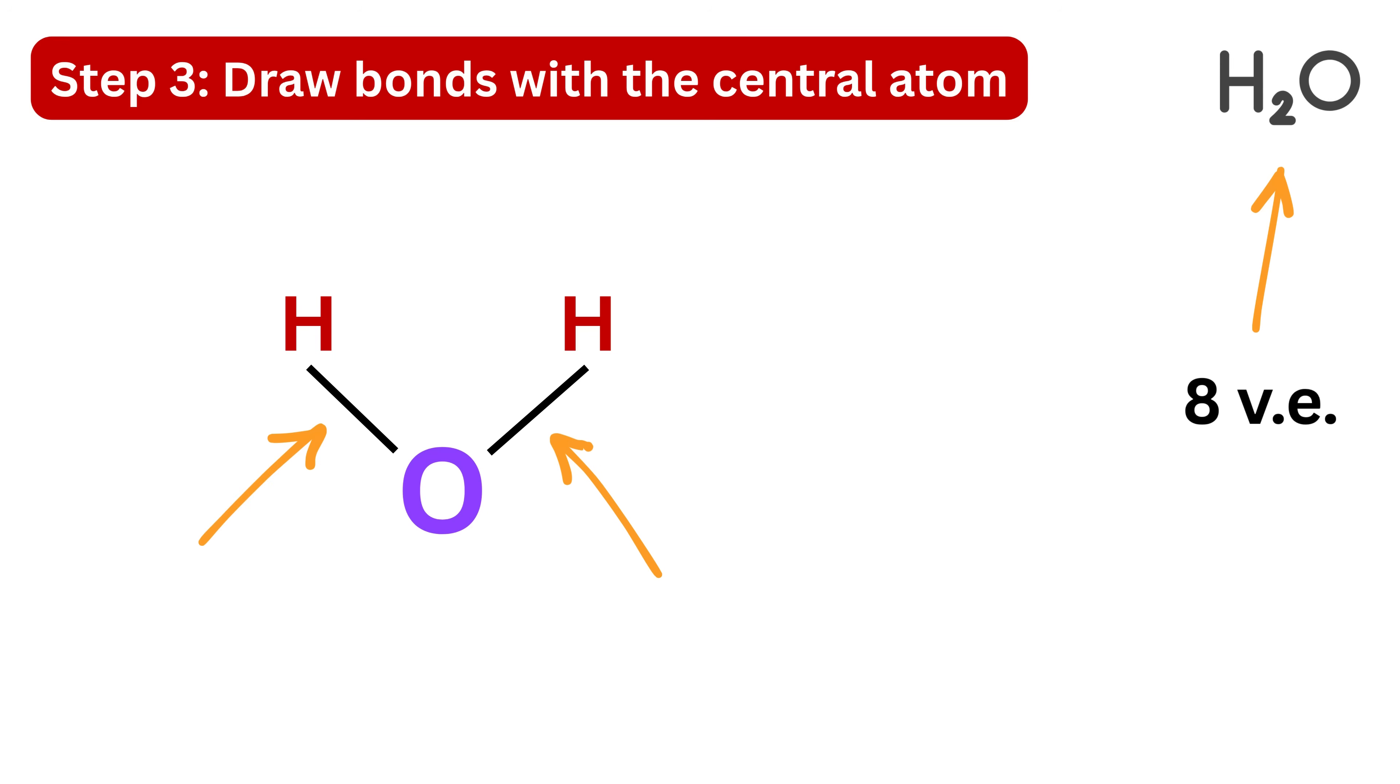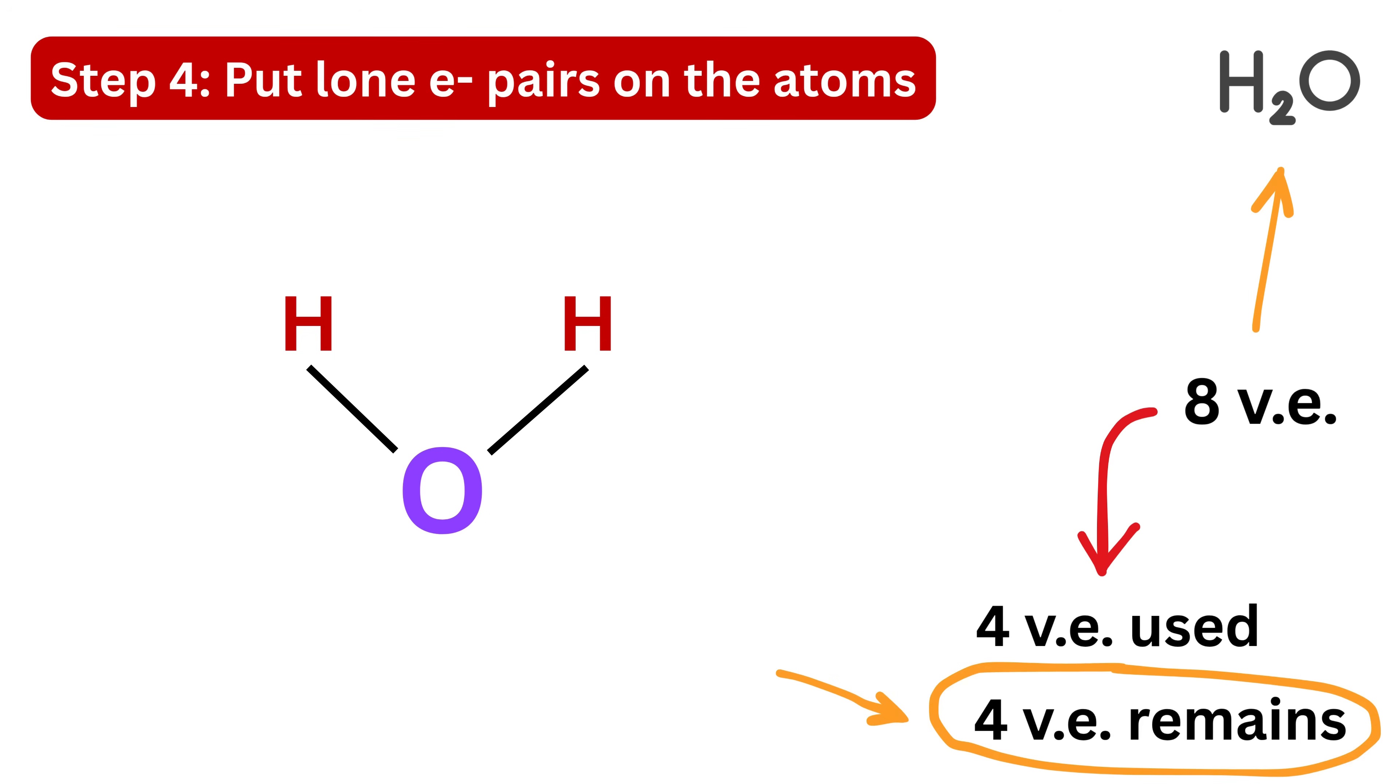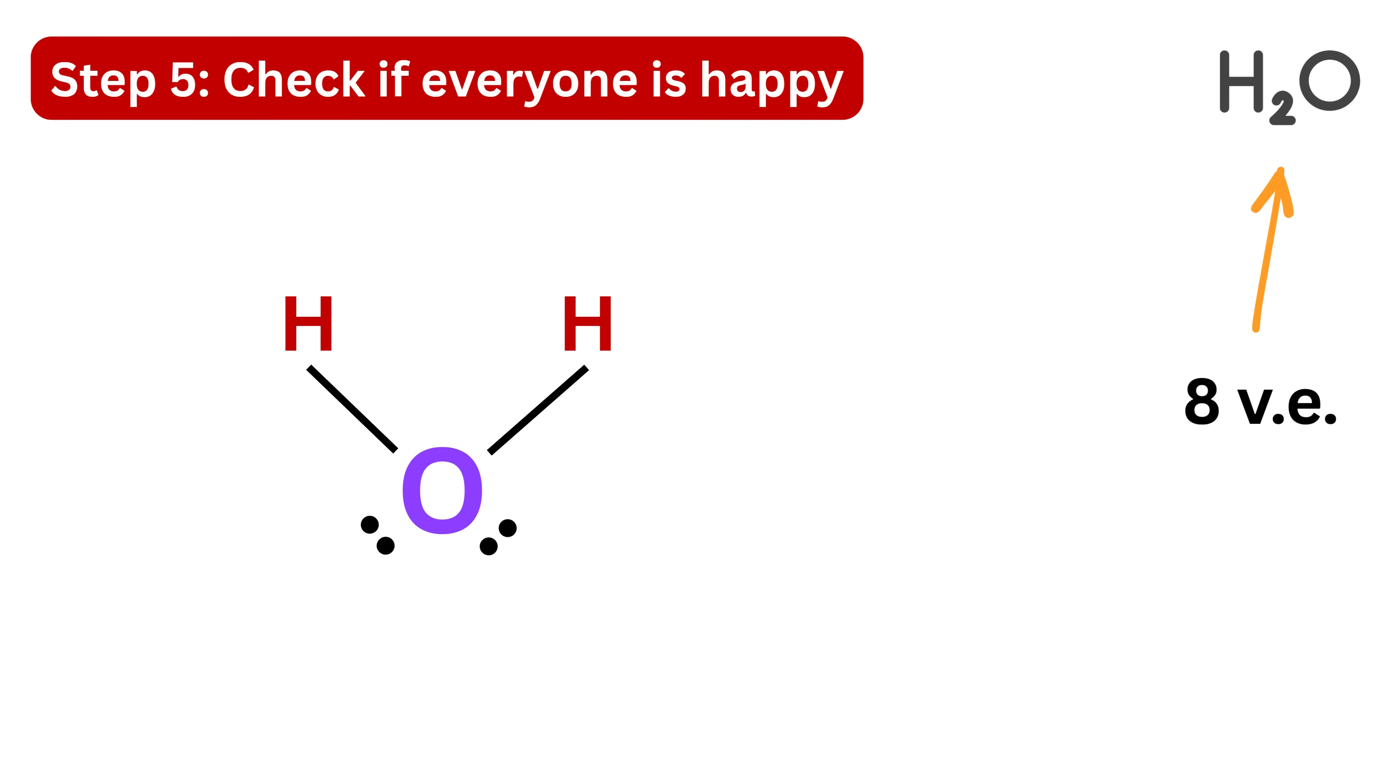Every single bond uses up two electrons, so when we draw two such bonds, we've used a total of four electrons from the available eight valence electrons in the water molecule. At this point, each hydrogen is happy because it now has access to two electrons, satisfying its duet rule, while oxygen still has some electrons left which we'll use in the next steps to complete its octet. So now in step four, we put these four electrons as lone pairs on the central atom, or oxygen. Remember, hydrogen can hold only two electrons in total, so it's already satisfied and doesn't need any more dots. Place the remaining four electrons as two lone pairs on the oxygen atom. Finally, in step five, we check if everyone is happy. Each hydrogen has two electrons, or a duet, and oxygen has eight electrons, or an octet. Nice! No need for double or triple bonds. So this is the Lewis diagram for a water molecule.